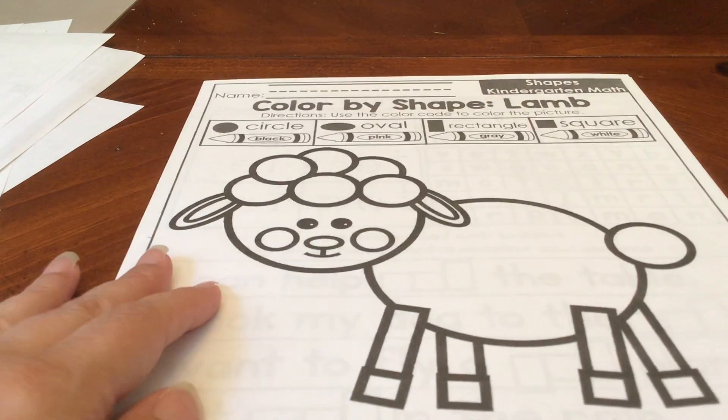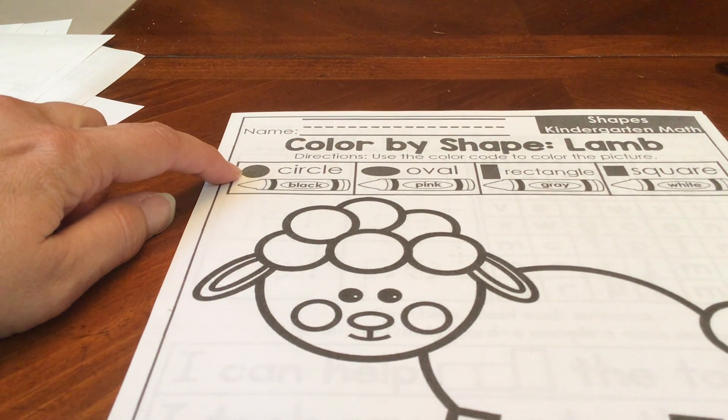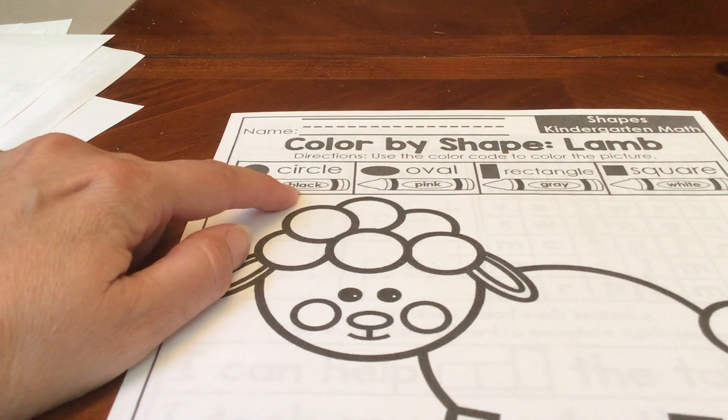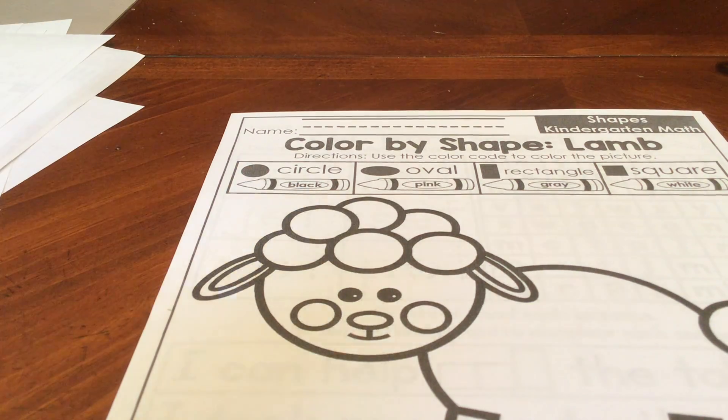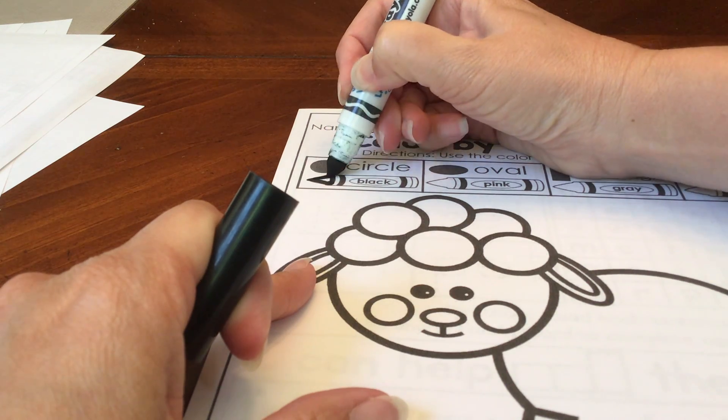All right, we have color by shape. First, we're going to look at the shapes at the top. What shape is this? A circle and it says that we're supposed to color it black. I'm going to color part of my crayon to help me remember what color I'm using.